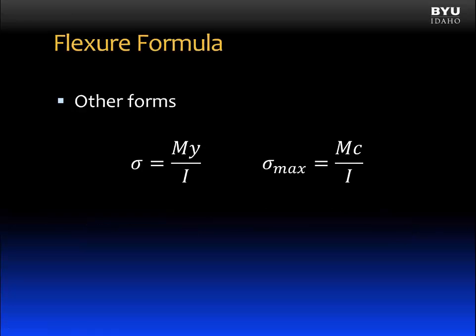Now there are other forms of the flexure formula that you will sometimes see. In the form on the left, the negative sign has been omitted from the equation, and the sign on stress is not being considered. Sometimes this is just fine — for example, if you are using a steel beam, which has similar strength in compression and tension, then the sign doesn't really matter. But if you are using a cast iron beam, which is very strong in compression but very weak in tension, then the sign may indeed matter. In the form of the equation on the right, sigma max equals mc over i. The negative sign has been omitted, and instead of y, we use c, where c is the maximum value of y. That gives us the largest value for stress, which is why we write it as maximum stress in a cross-section.